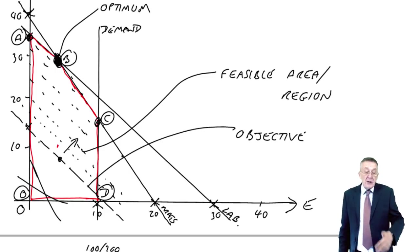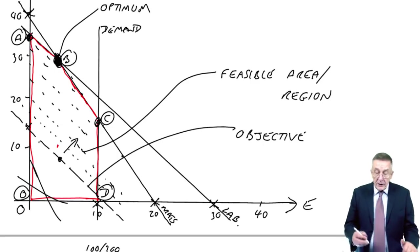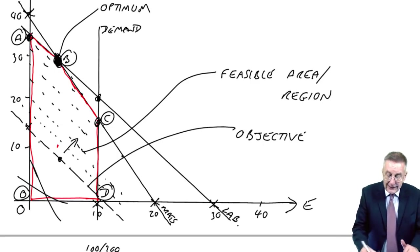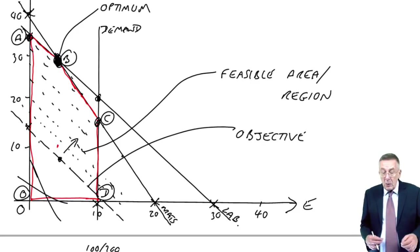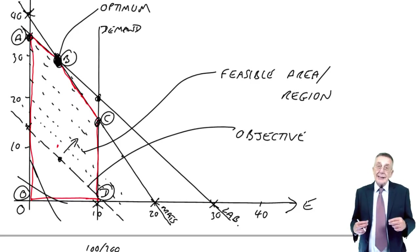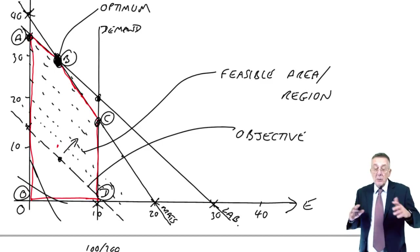That if you didn't draw a graph and just checked where all the lines crossed, you'd be including that point as well. And without the graph, you wouldn't realise that that point wasn't even a possible point. Whether the profit there was higher or low would be irrelevant.